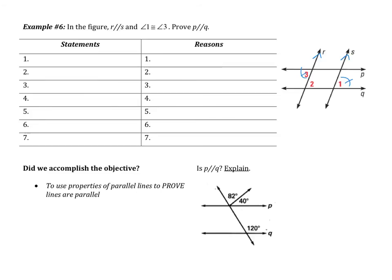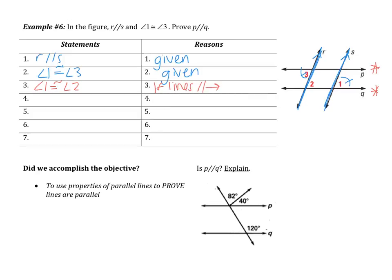We always start a proof with what's given. I know R is parallel to S, and I know angle 1 is congruent to angle 3 — both given. We want to prove that P and Q are parallel. They tell us R and S are parallel for a reason. If R and S are parallel, I have two transversal options: P or Q. Looking at line Q, it has angles 1 and 2 on it, and they are corresponding angles, so they are congruent. My next statement is that angle 1 is congruent to angle 2, because if the lines R and S are parallel, then corresponding angles are congruent.